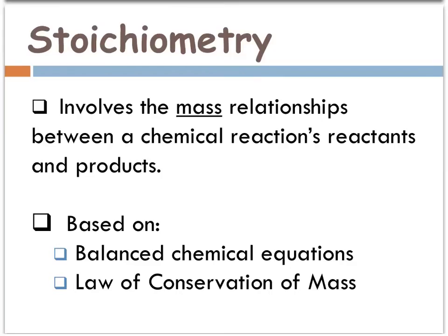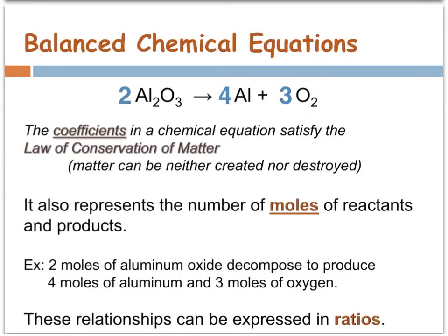With stoichiometry, we can compare various reactants and products within a balanced chemical equation. In order to successfully complete stoichiometry problems, you have to start with a balanced chemical equation. This follows the law of conservation of mass. In this example of a balanced chemical equation of the decomposition of aluminum oxide, the coefficients represent the number of moles of each. These are used for the comparisons.